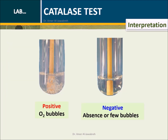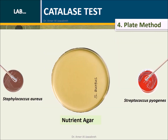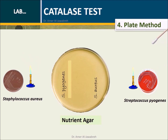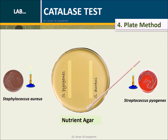Interpretation: Oxygen bubbles indicate positive results; absence or few bubbles indicates negative results. Plate method: Using a sterile cotton swab, pick up a few isolated colonies from a culture plate on a nutrient agar.